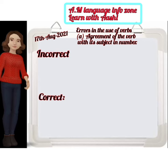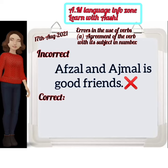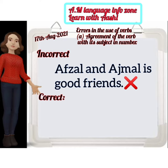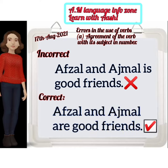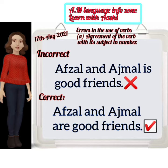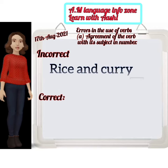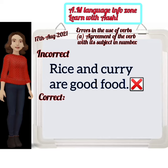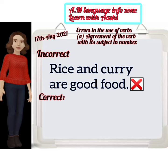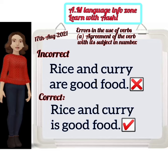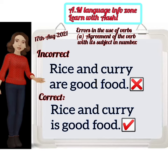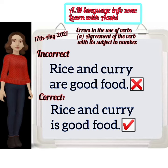The first sentence is: 'Abzil and Ajmal is good friends' — incorrect. The correct form is: 'Abzil and Ajmal are good friends.' Next: 'Rice and curry are good food' — incorrect. The correct form is: 'Rice and curry is good food.'